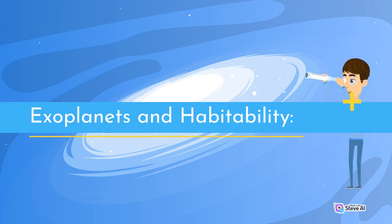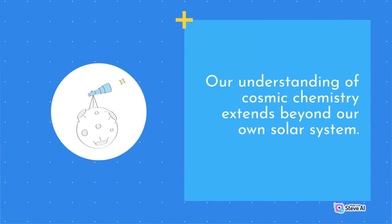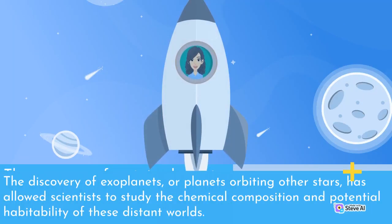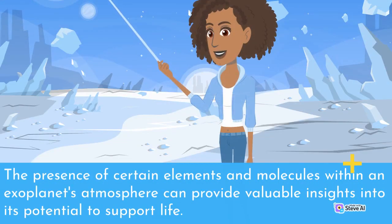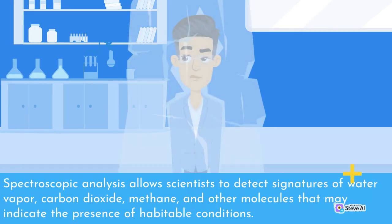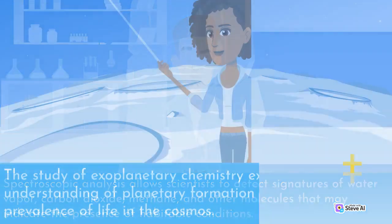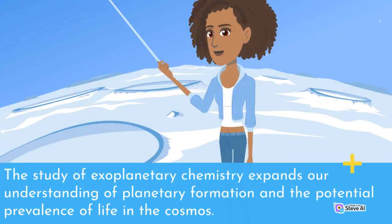Our understanding of cosmic chemistry extends beyond our own solar system. The discovery of exoplanets, or planets orbiting other stars, has allowed scientists to study the chemical composition and potential habitability of these distant worlds. The presence of certain elements and molecules within an exoplanet's atmosphere can provide valuable insights into its potential to support life. Spectroscopic analysis allows scientists to detect signatures of water vapor, carbon dioxide, methane, and other molecules that may indicate the presence of habitable conditions. The study of exoplanetary chemistry expands our understanding of planetary formation and the potential prevalence of life in the cosmos.